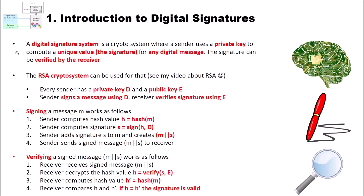A digital signature system is a crypto system where a sender uses a private key to compute a unique value — the signature — for any digital message, and the signature can then be verified by the receiver. For example, the RSA crypto system can be used for that. To know how RSA works, have a look at my video about RSA on this channel. With such a crypto system, every sender has a private key D which is only known to him, and a public key E which is known to everyone. When the sender wants to sign a message, he uses his private key D, and the receiver can then use the public key to verify the signature.